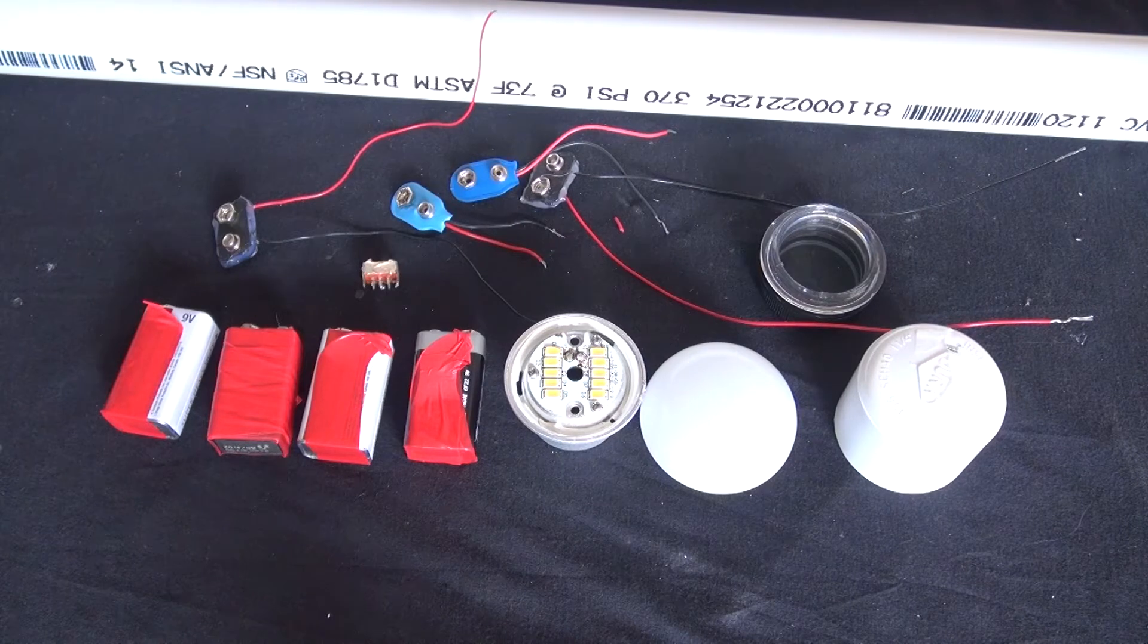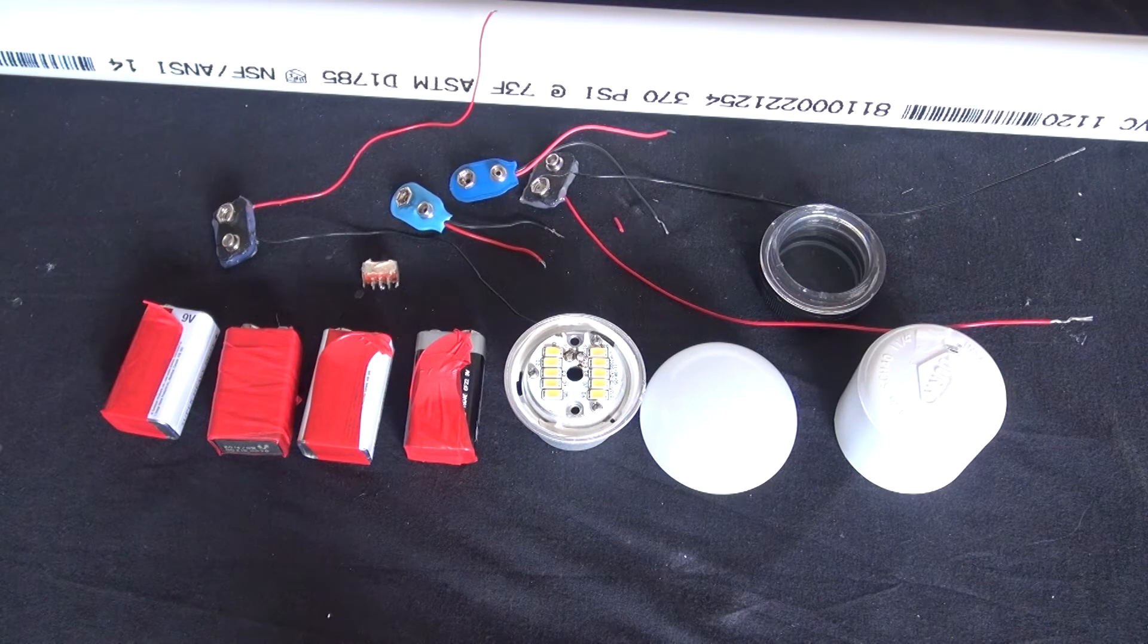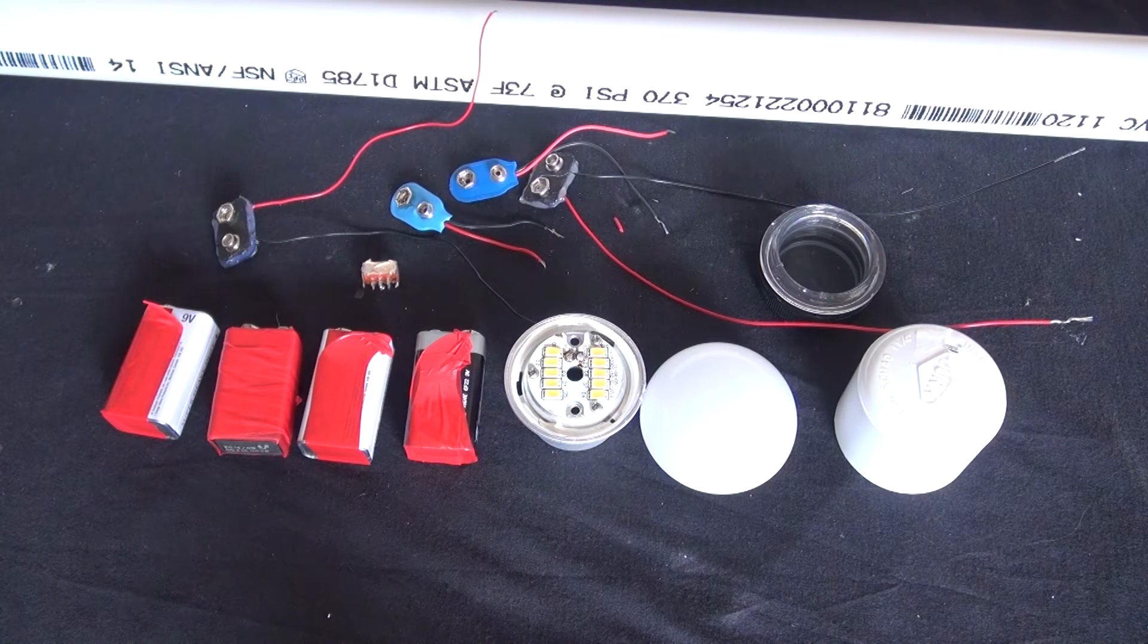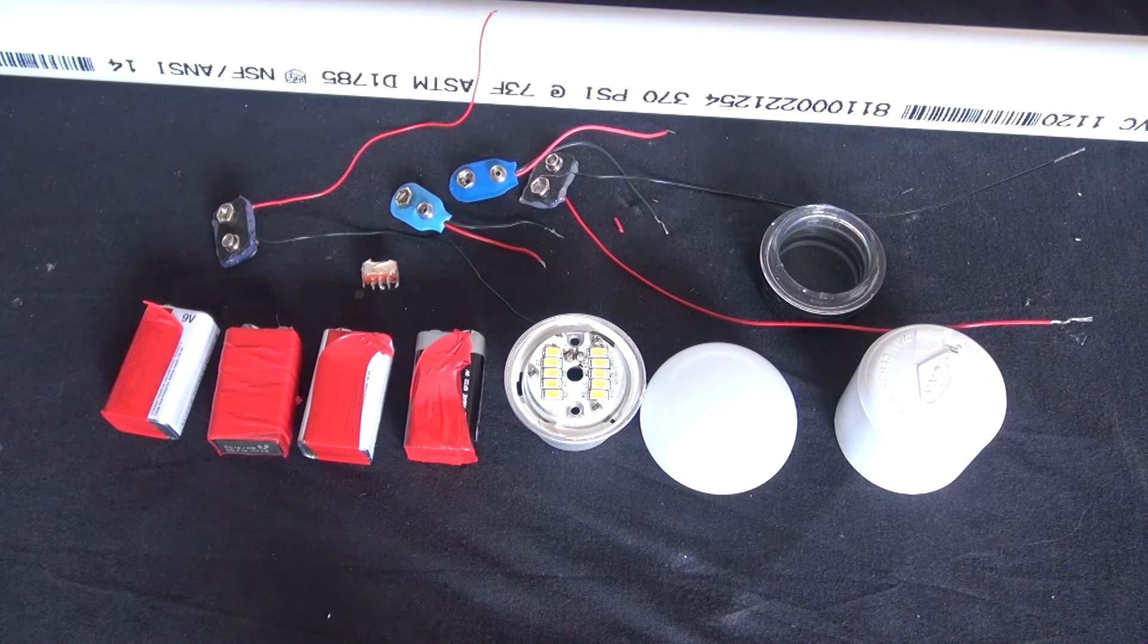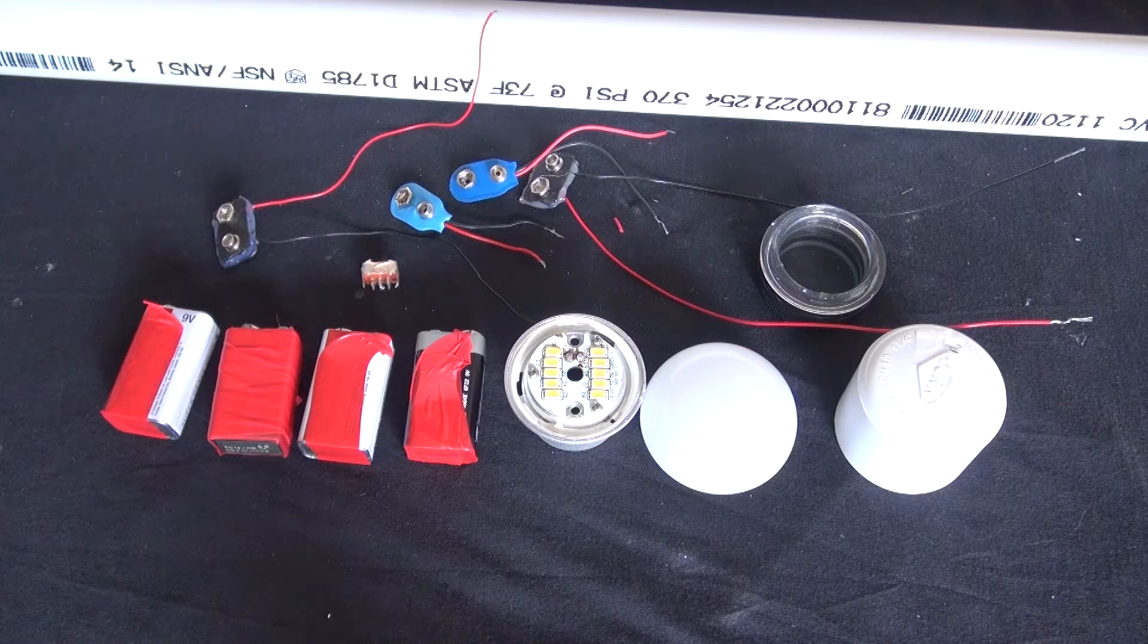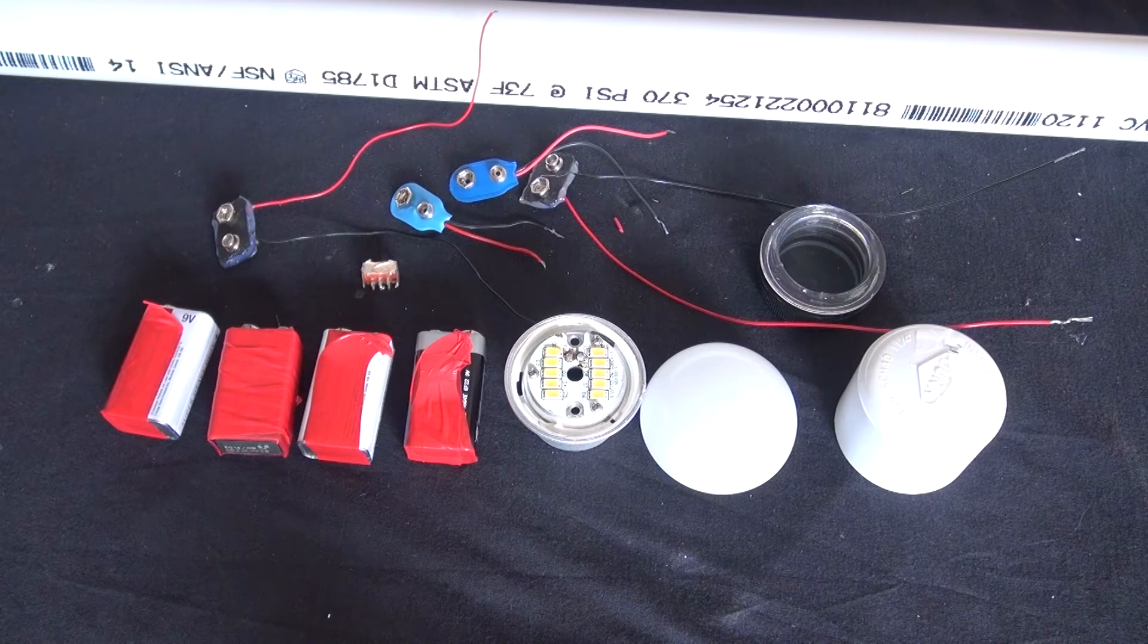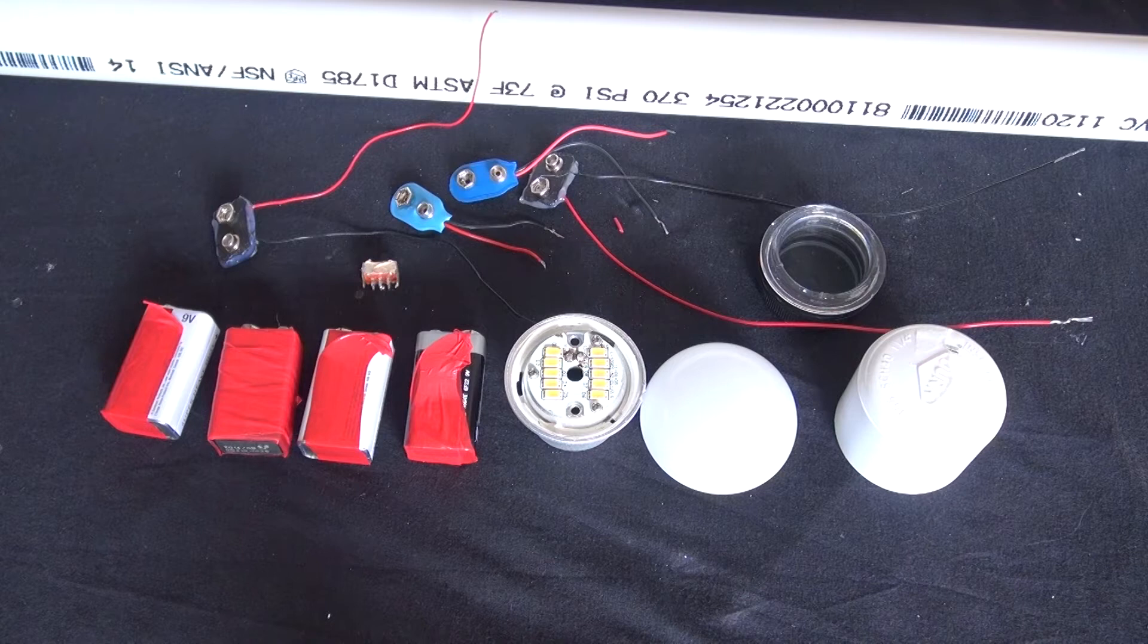So what you're going to need to be able to create this flashlight is you're going to need four 9-volt batteries because this flashlight uses 36 volts, a single pull single throw switch, four 9-volt battery connectors, the LED lightbulb top,